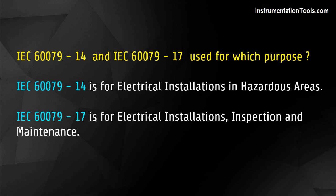IEC 60079-14 and IEC 60079-17 are used for which purpose? IEC 60079-14 is for electrical installations in hazardous areas. IEC 60079-17 is for electrical installations, inspection, and maintenance.